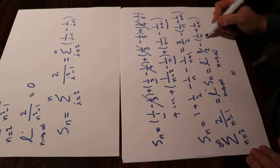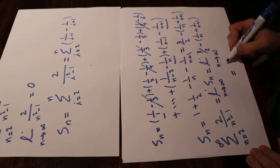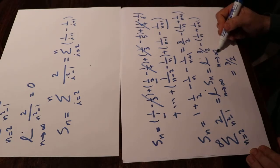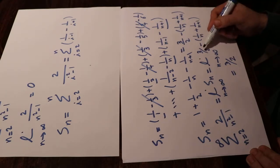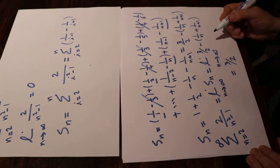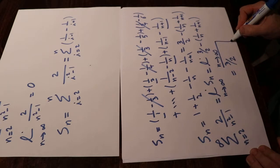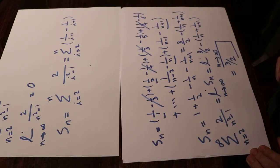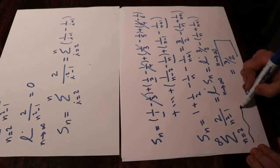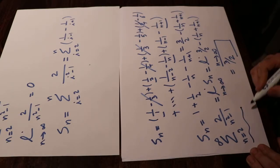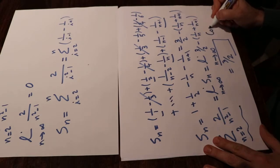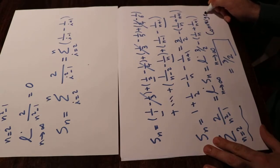This equals 3/2, because 1/n and 1/(n+1) both go to 0 as n goes to infinity. So we get 3/2 minus 0 minus 0, which equals 3/2. Since this limit exists, the series is convergent and it converges to 3/2.